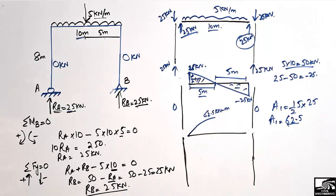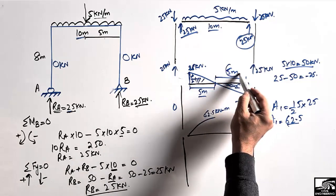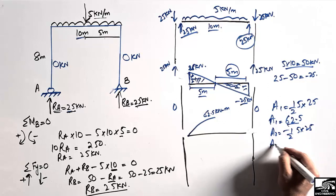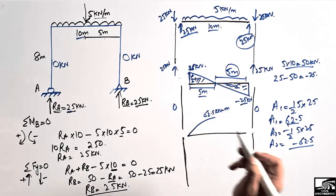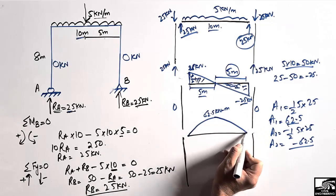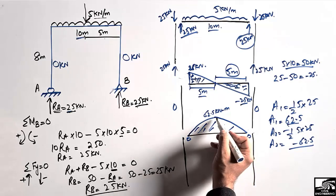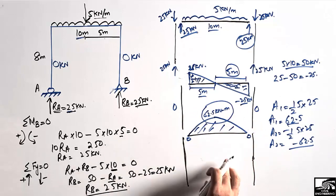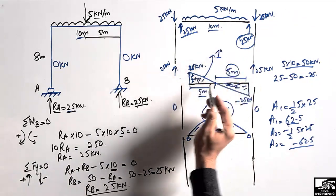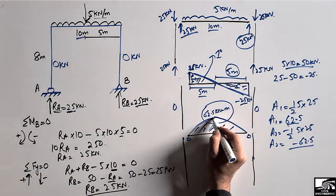Similarly, the area of the second triangle: height 25 and base 5, so A2 = −½ × 5 × 25 = −62.5 kilonewton·meter. Adding A1 and A2 gives zero, confirming the bending moment returns to zero at the right end. The maximum bending moment is 62.5 kilonewton·meter at midspan. Note that the shear force diagram is a first-degree (straight inclined) line, while the bending moment diagram is second-degree — a parabola — since the BMD is always one degree higher than the SFD.